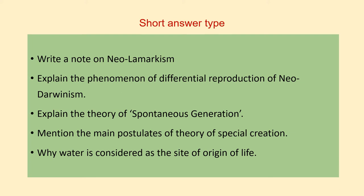Now some short answer type questions — you have to answer each in one paragraph. The first question is: write a note on neo-Lamarckism. Second: explain the phenomenon of differential reproduction in neo-Darwinism. Third: explain the theory of spontaneous creation. Fourth: mention the main postulates of the theory of special creation. And the last: why is water considered as the site of origin of life?